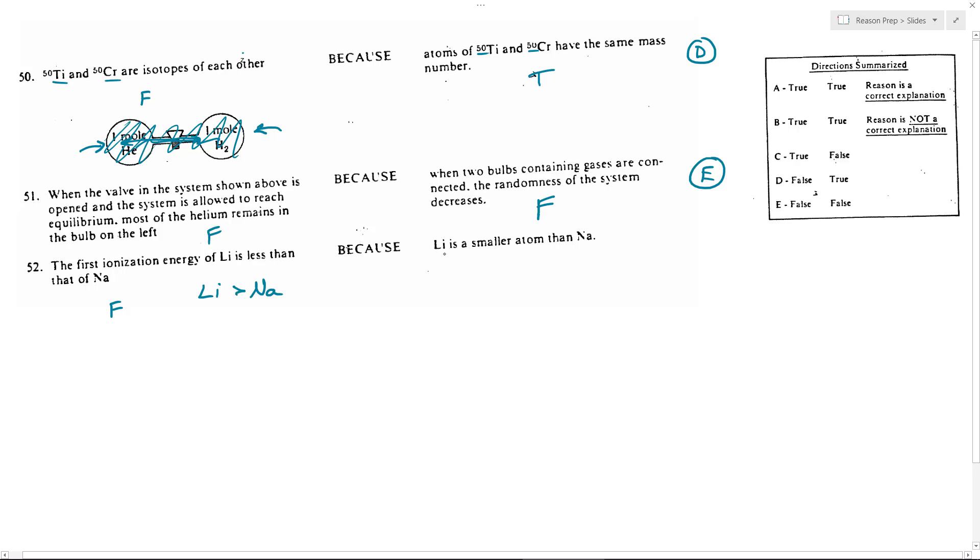The radius of an atom increases down a group. So therefore, Li would indeed be smaller than sodium based on that trend. And so that would be true. And so overall, the answer to this would be D.